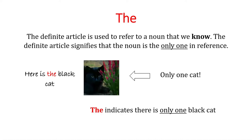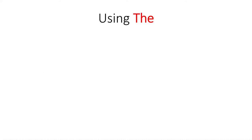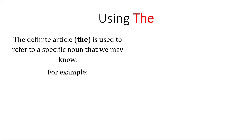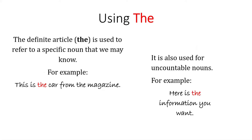The definite article is also used to refer to a specific noun that we may know. For example: 'This is THE car from the magazine' — it's one particular car I'm referring to. We also use it for uncountable nouns. For example: 'Here is THE information you want.'